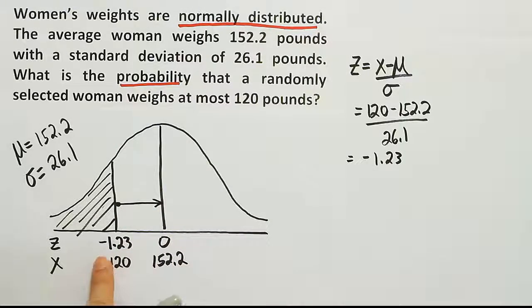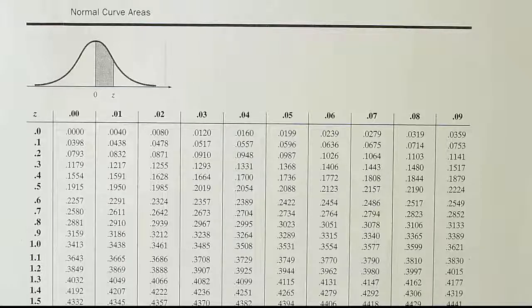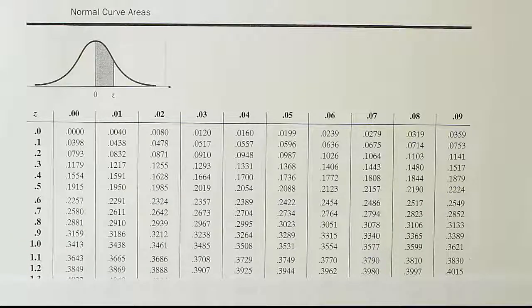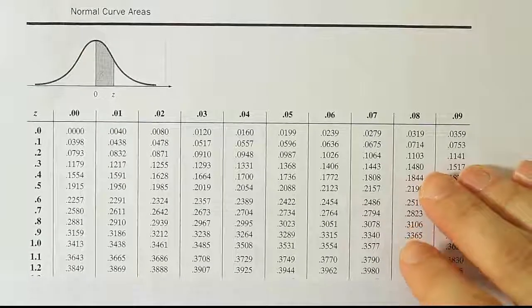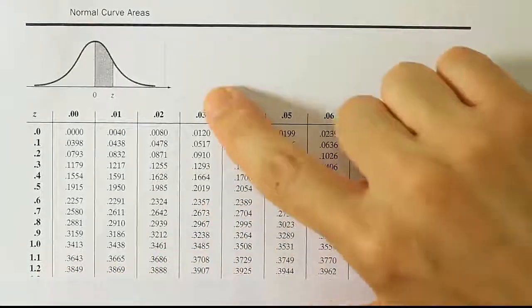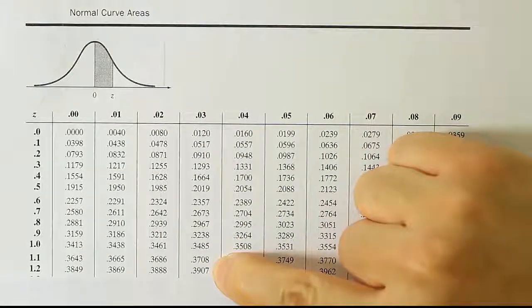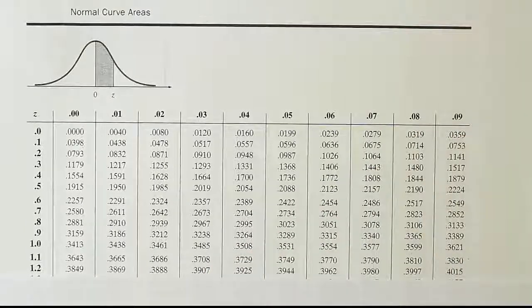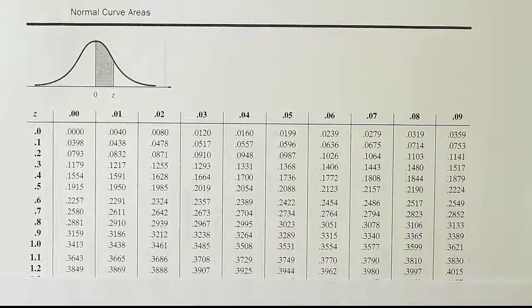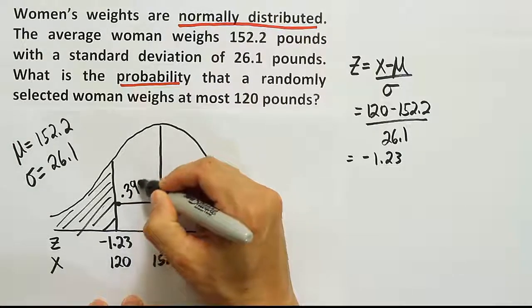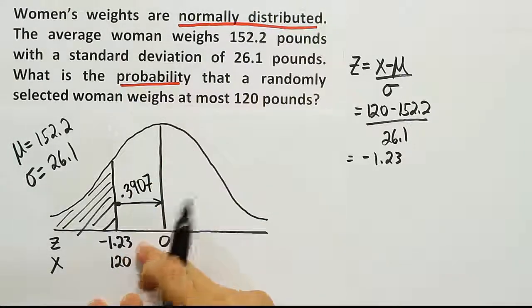Now we're going to look up negative 1.23 on the curve. Let's find the 1.23 row. Remember, there's no negatives, so we have the 1.2 row and then the 3. We find the answer is 0.3907 when we look up negative 1.23.